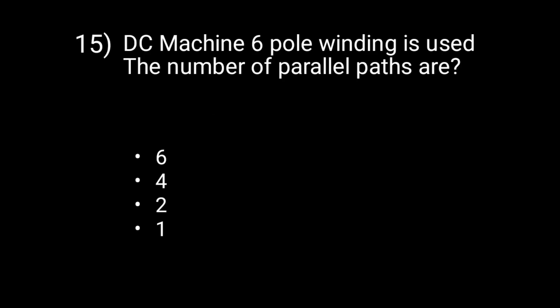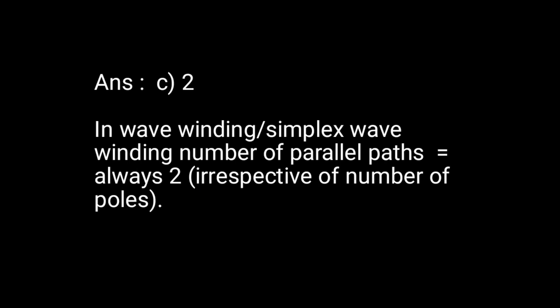Question 15: In a DC machine with 6-pole wave winding, the number of parallel paths is 2. For simplex wave winding, the number of parallel paths is always equal to 2, irrespective of the number of poles.